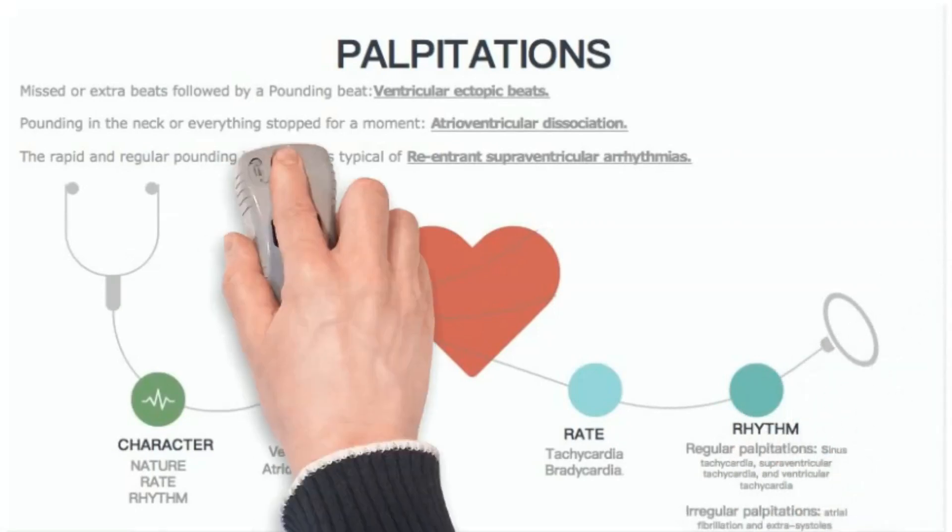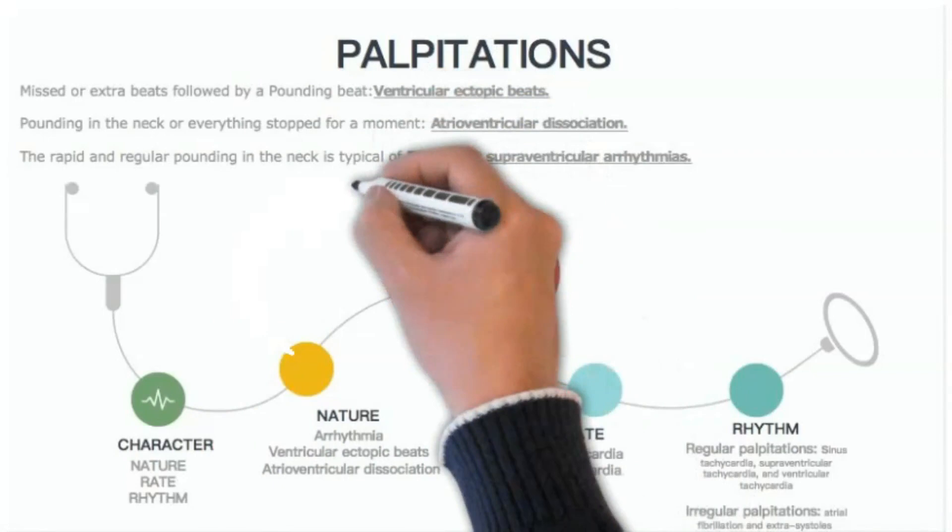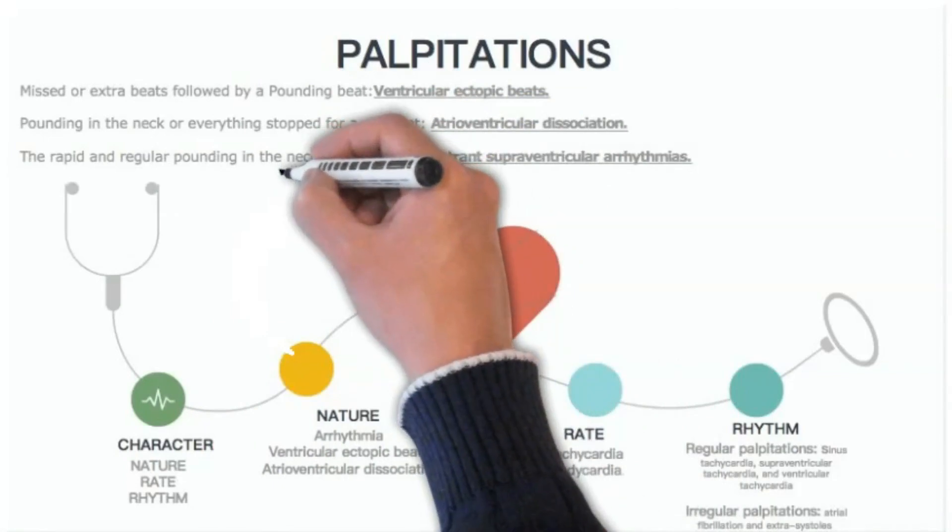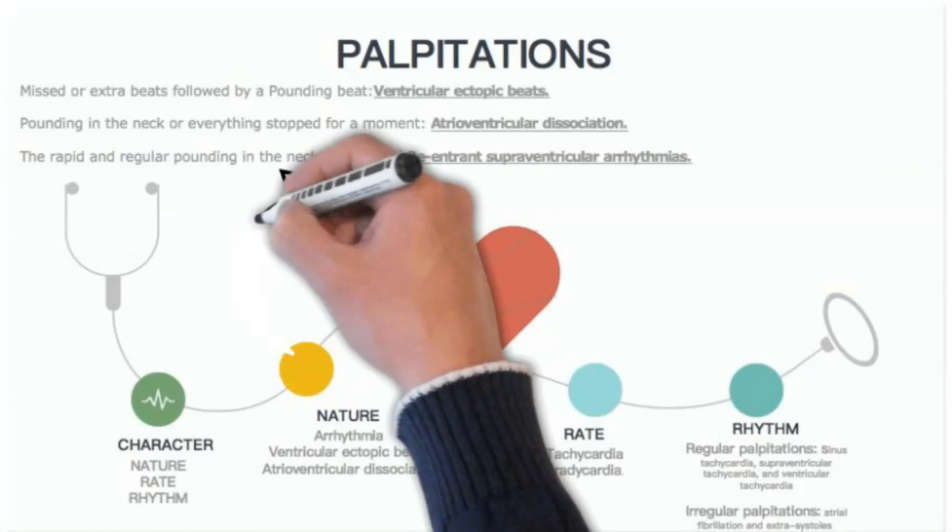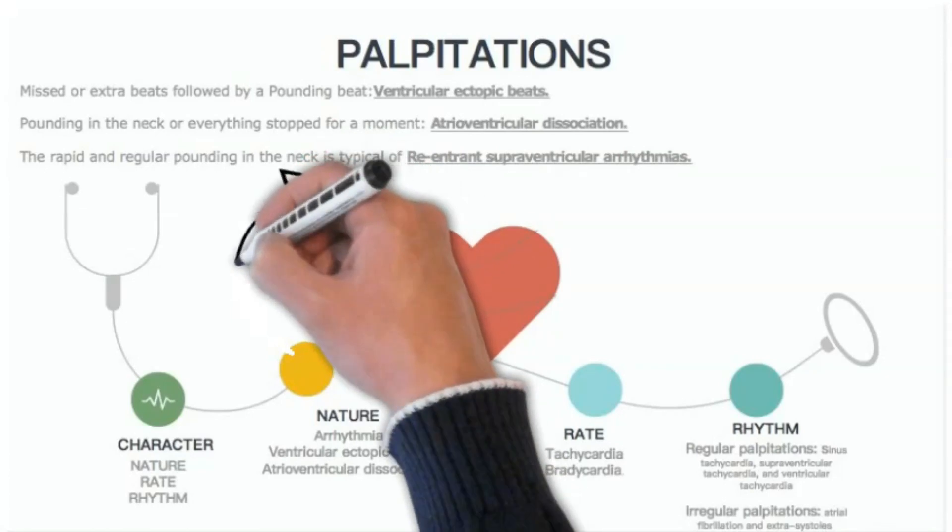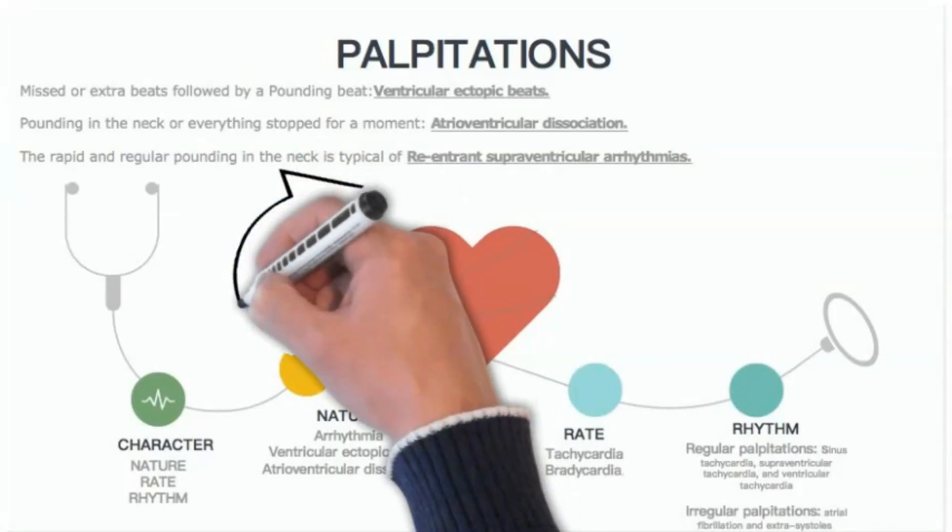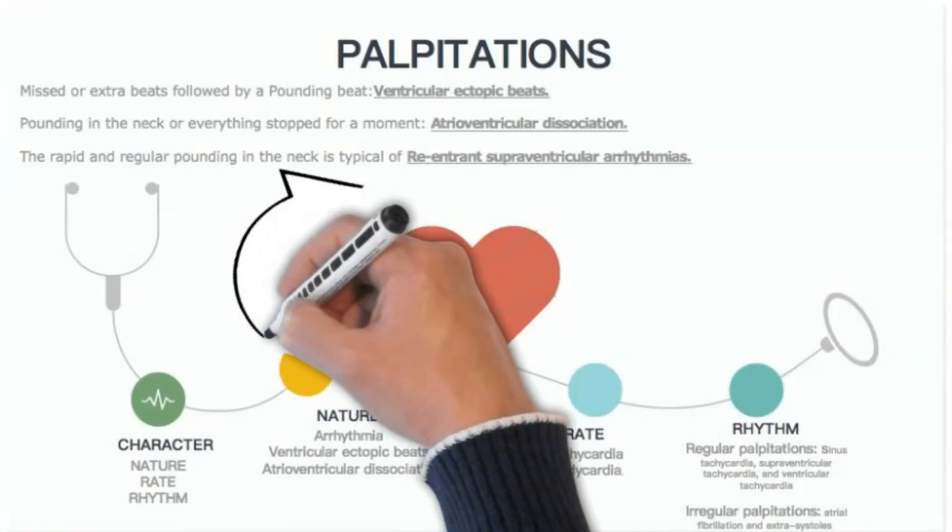Regarding the explanation of this phenomenon, the pounding feeling in the neck is due to cannon A waves, which suggest atrial contraction against closed atrioventricular valves, whereas the rapid and regular pounding in the neck is typical of re-entrant supraventricular arrhythmias.